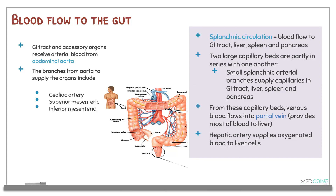We have two large capillary beds that are partly in series with one another. These are the small splanchnic arterial branches that supply the capillaries in the gastrointestinal tract, liver, spleen, and pancreas. From these capillary beds, venous blood flows into the portal vein, providing most of the blood flow to the liver. The hepatic artery supplies the liver with oxygenated blood.